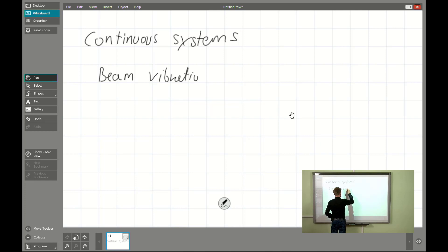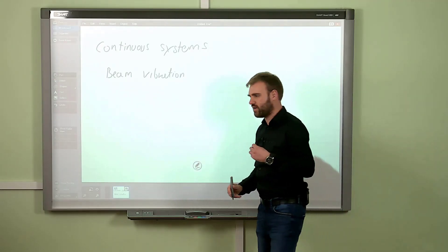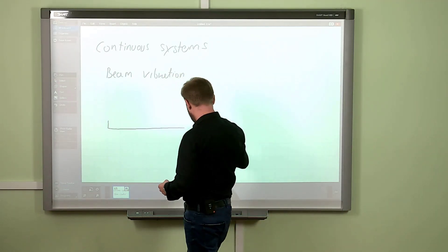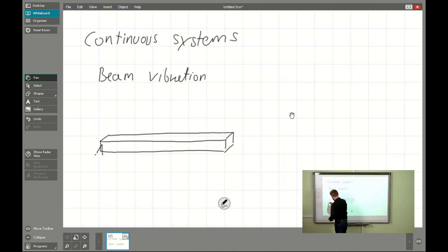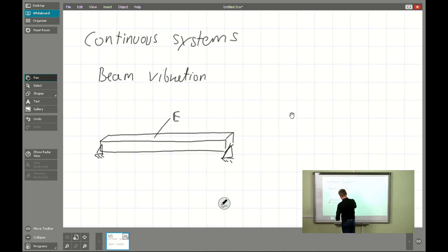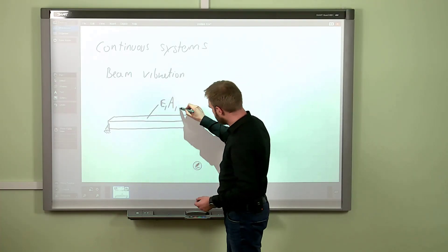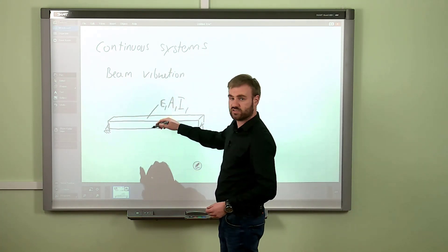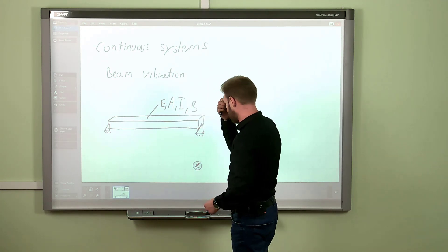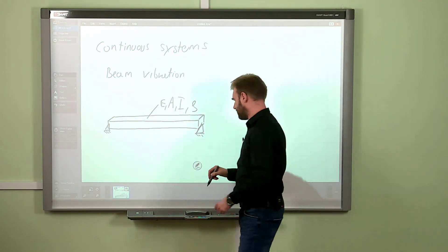This time we have to take into account flexural rigidity of our element. We will be considering a prismatic rod, and there will be features connected with the elasticity given by Young's modulus, connected with the area, and importantly for bending, there will be the moment of inertia of the cross section of our beam. We also have to take into account density of the system.